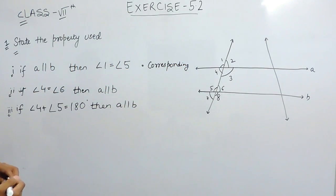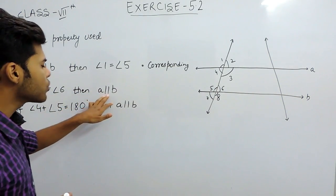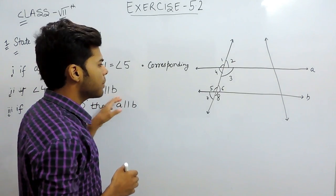Now the second part. If angle 4 is equal to angle 6, then these two are parallels. A and B are parallel.